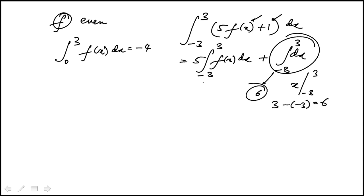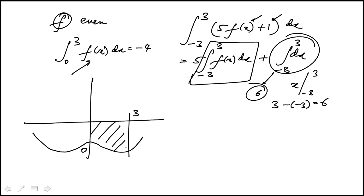So this piece is 6. We just have to figure out that part knowing this. So the key thing to remember is that when it's an even function, so for example f could look something like that, and 0 to 3, for example this is 3, that is minus 4.